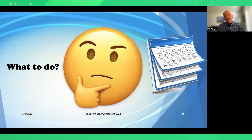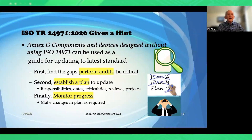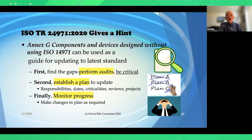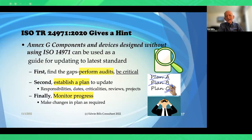How can organizations get on track? Annex G of ISO TR 24971-2020 provides guidance on components and devices designed without using the latest edition of ISO 14971. First, find the gaps — perform audits, be critical, find all problems. Second, establish a planned update identifying who is responsible, the dates, criticalities, reviews, and projects needed. Finally, monitor progress and make changes to the plan as required — because the plan at the start rarely looks the same at the end.